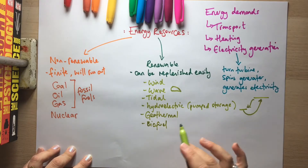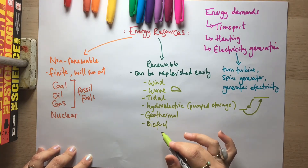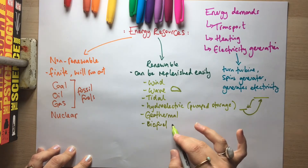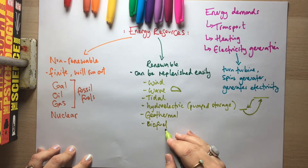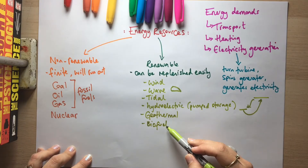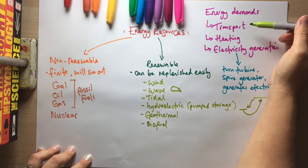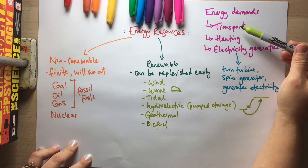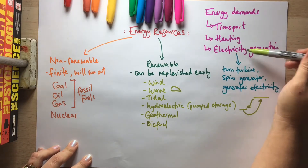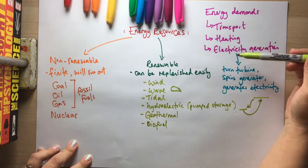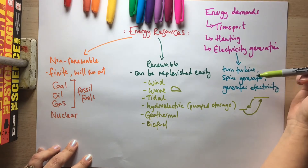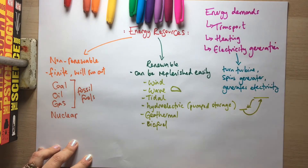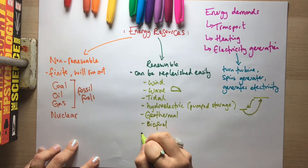Biofuels can be things like vegetable oil, rapeseed oil, sugarcane, or methane gas produced from organic matter rotting — essentially anything from recently living or living organisms. Biofuels can be used in transport (many city buses run on biofuels), for heating, or for electricity generation, where you burn the fuel, heat water to steam, turn a turbine, spin a generator, and generate electricity.